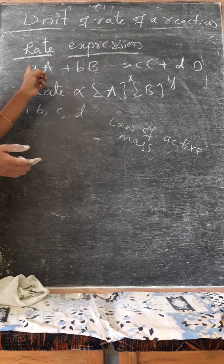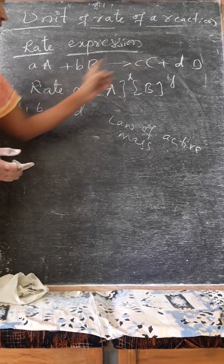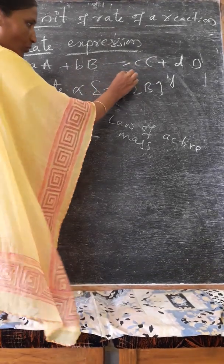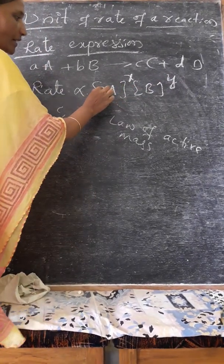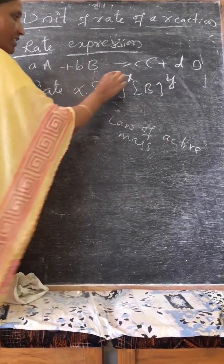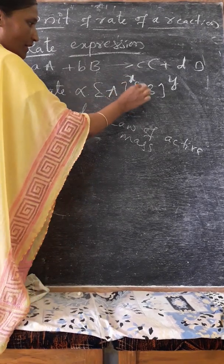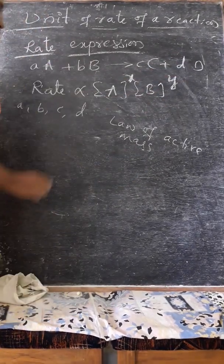The stoichiometric coefficients - reactant A, its coefficient is taken as its power X, and B is taken as its power Y.